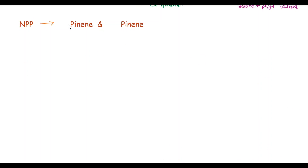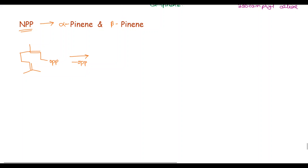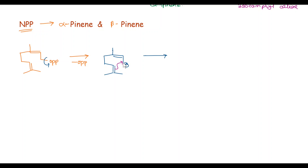Now we will see the Biogenesis of Alpha-Pinene and Beta-Pinene from NPP. So, the first structure is NPP. In the first step, loss of OPP takes place from NPP, and we get this allylic cation. In the next step, this double bond attacks on this carbocation, and we get a six-membered ring with this tertiary cation and this double bond.